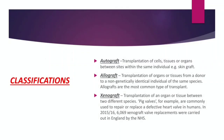Classification: transplants are classified as autograft, allograft, and isograft. An autograft is transplantation of organs within the same individual. An allograft is transplantation to a non-genetically identical person. Because we are non-genetically identical individuals, we use an allograft. In the medical field, allograft is successful.